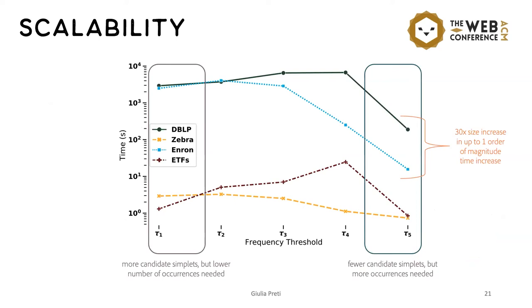Here we can see the running time of the algorithm for different datasets. We can see that the running time follows a concave curve. And this is due to the fact that at higher frequencies, we have a few candidate frequency simplets, and therefore the algorithm terminates earlier. While on the other hand, at the lower frequencies, the presence of higher order simplets in the complex simplifies the task of searching for occurrences. And so also in this case, we can terminate early.